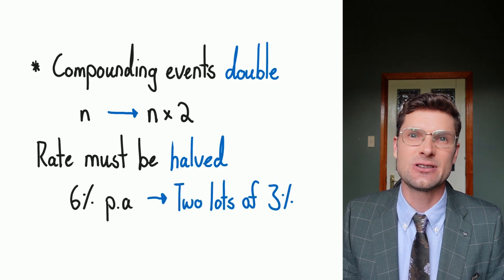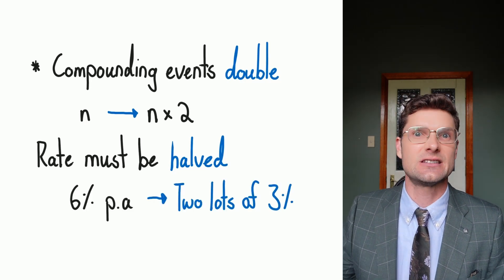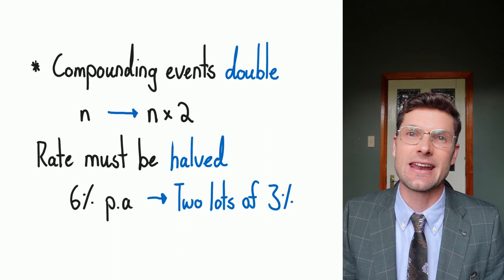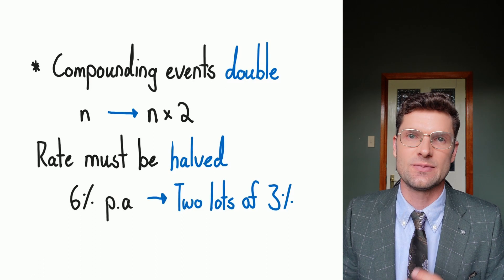Because if I was getting 6% per annum and I got 6% twice a year, that would be way too much money. So instead of getting 6%, I get 3% twice per year.